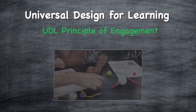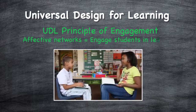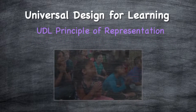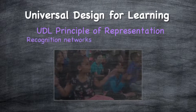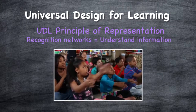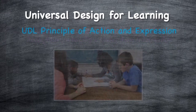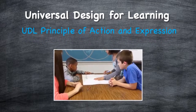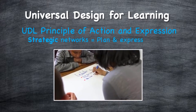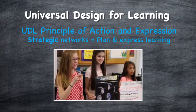Originated by CAST, UDL is a framework based on neuroscience, organized around three broad principles that align with three brain networks. The UDL principle of engagement corresponds to the affective networks — the parts of the brain that engage students in learning. The principle of representation corresponds to the recognition networks — the parts of the brain that understand vocabulary, concepts, and new information. And the principle of action and expression corresponds to the strategic networks — the parts of the brain students use to plan their own learning, show what they've learned, and express themselves.